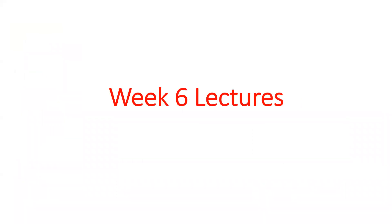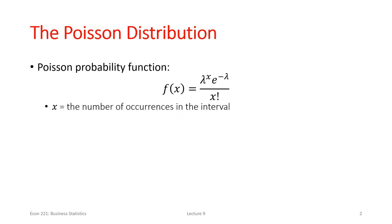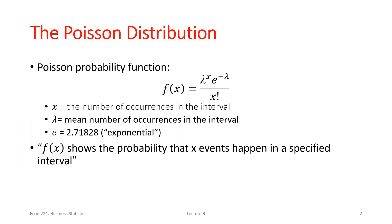We'll pick up where we left off, finish up the Poisson distribution, do a little with the uniform distribution, set up for review Wednesday, and then we have the in-class exam this Friday. Very similar to the binomial, with the Poisson distribution we're trying to find the probability of a different number of successes. X is the number of successes we're looking for, and lambda is the average number of successes we typically see — that has to be given to us.